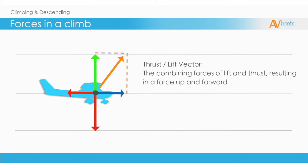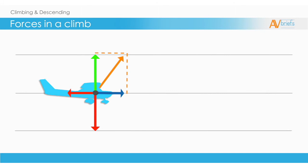It is the combining forces of lift and thrust, resulting in a force up and forward. There is also the weight-drag vector. This is the combining forces of weight and drag. These result in a force down and backward, or rearward.